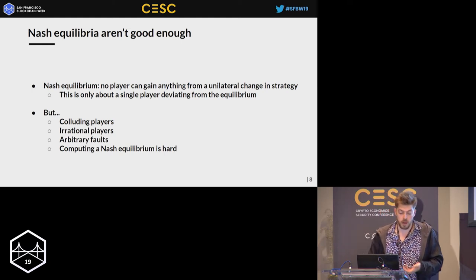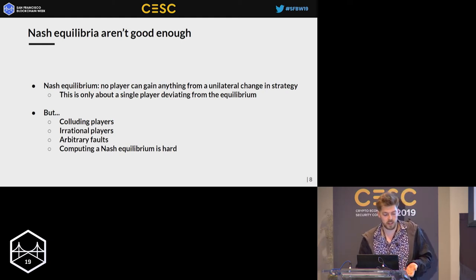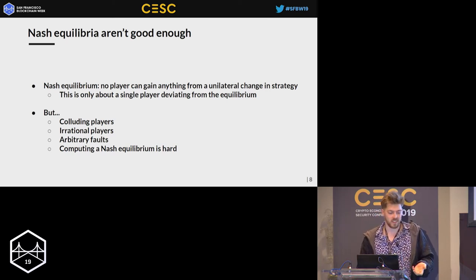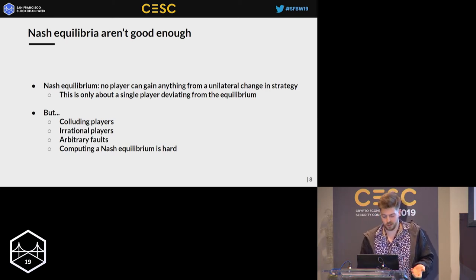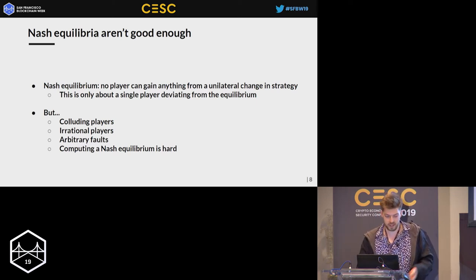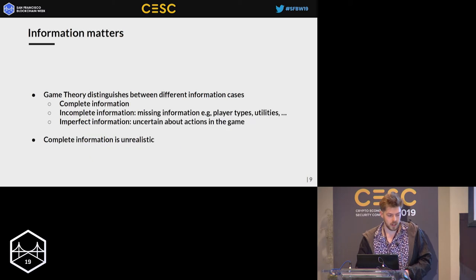If it's hard to compute a Nash equilibrium, how are you going to know what you're meant to play? And how are you going to know that other people have gone through the trouble of figuring out how they should play according to the equilibrium, or even that they're assuming others are playing it? This is a mess.